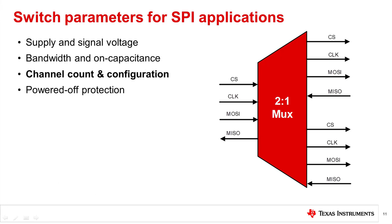The number of channels is another consideration for SPI multiplexing. For example, a four-channel two-to-one switch, shown here, may be used to switch between two secondary devices in a typical four-channel SPI bus. A six-channel device may be used if more data lines are required or in QSPI applications.